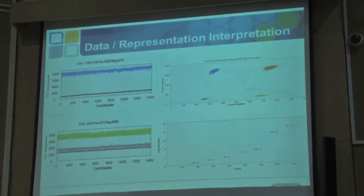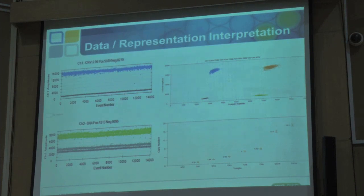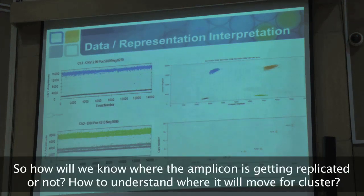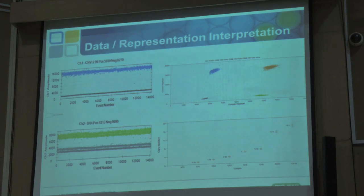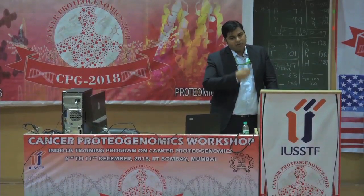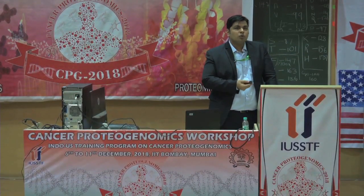If there is non-specific amplification, you would not get a single clean cluster — you would get multiple clusters because the amplicon size would vary. The system is very sensitive to this. A good practice is to run one known standard the first time you set up a new reaction, note which fluorescence amplitude it falls at, and use that as reference. If you see something variable, it means a non-specific product is also amplifying alongside your specific target.